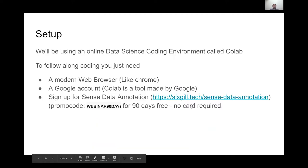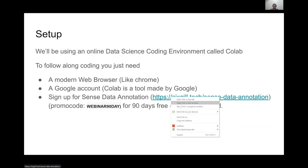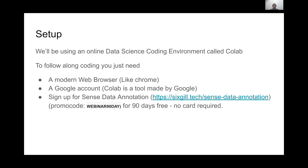For setup, we're going to be using a data science online environment called Google Colab. All you need is a modern web browser like Google Chrome and a Google account so you can save the code, make your own copy, and run everything. And then we're going to use this data labeling tool made by the company I work at called Sixkill.